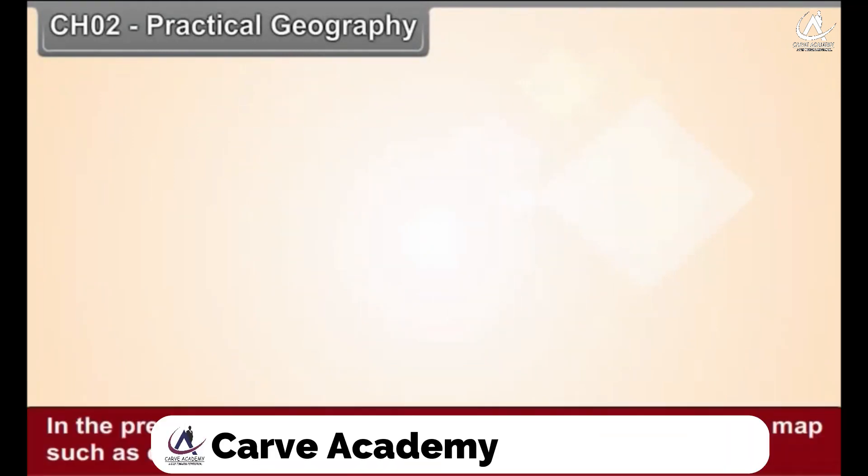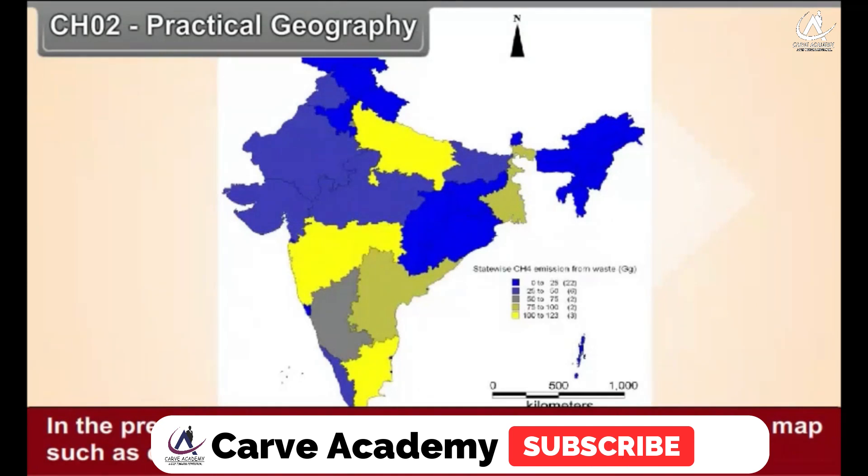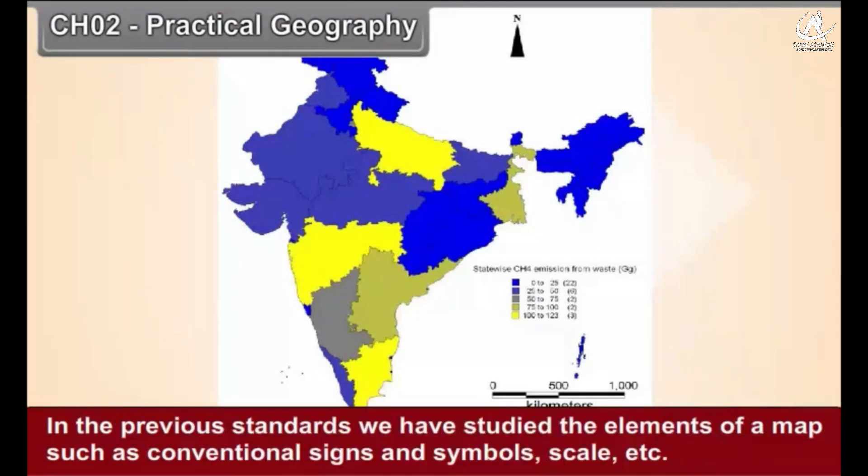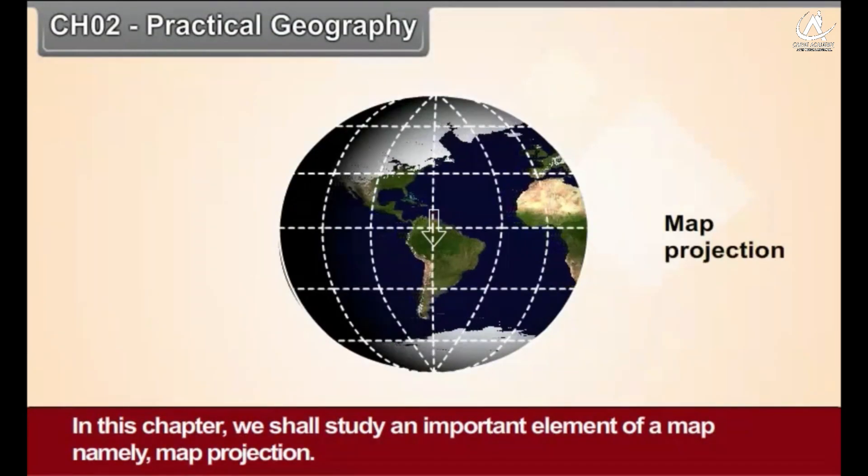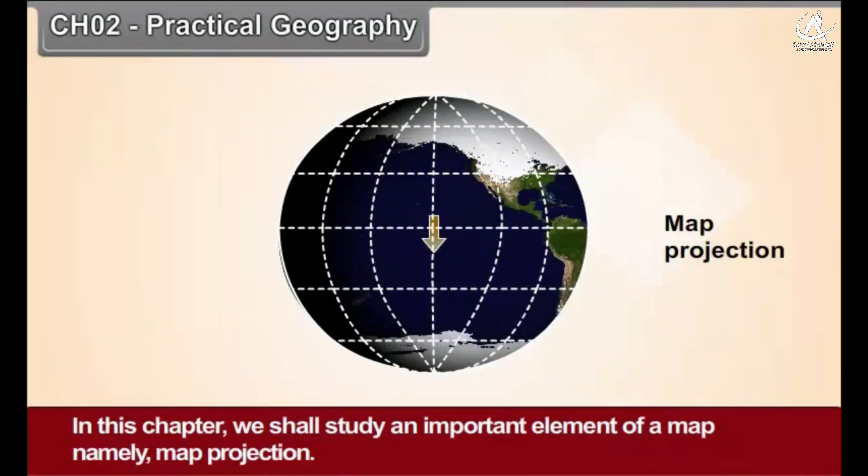Chapter 2: Practical Geography. In the previous standard we studied the elements of a map such as conventional signs and symbols, scale, etc. In this chapter we shall study an important element of a map, namely map projection.